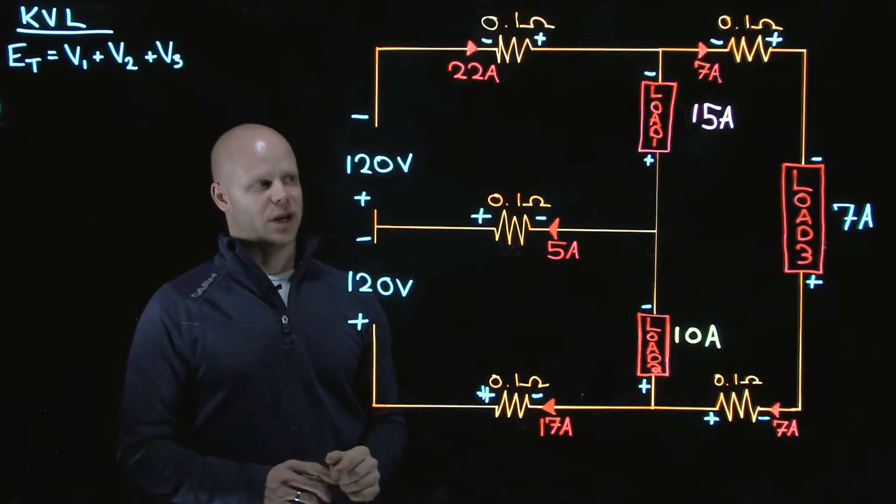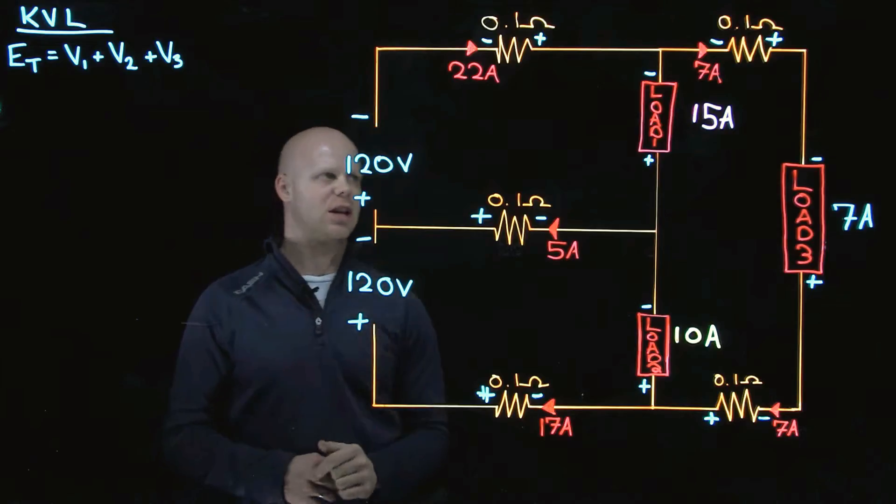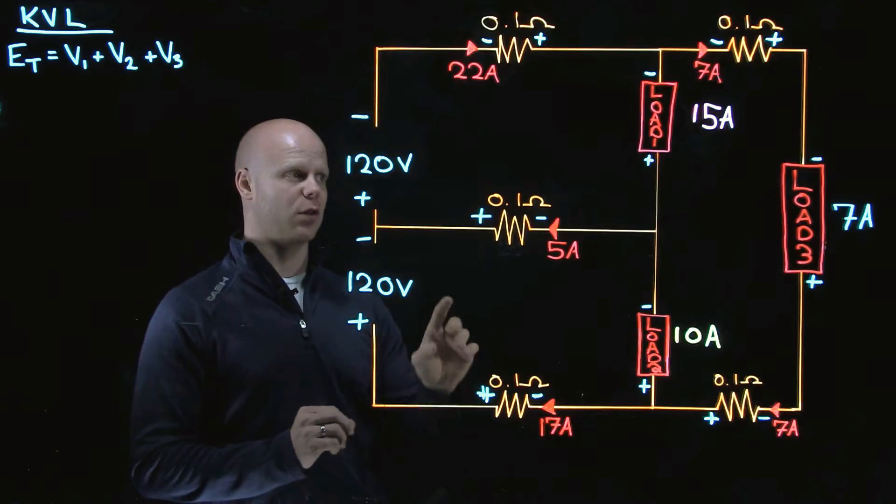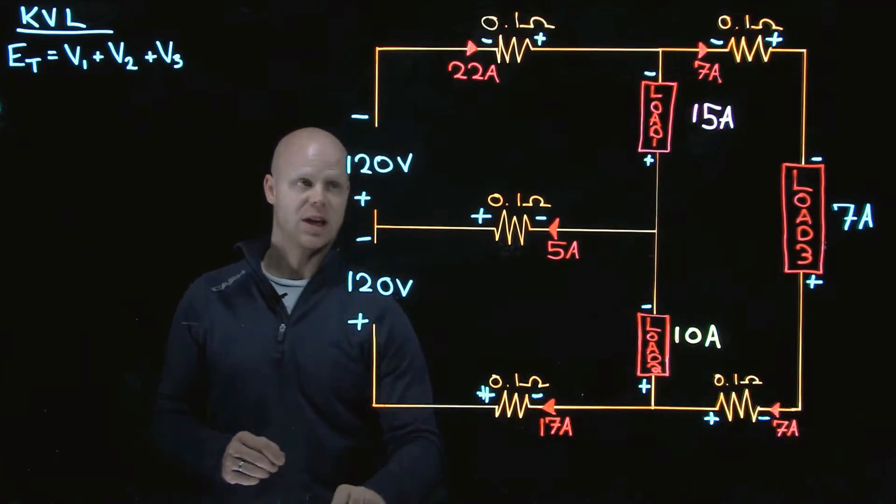We need to understand that polarity and we have to have that polarity plotted correctly. We use it with the direction that current is actually flowing through the circuit from negative to positive. You can use conventional flow with positive to negative. Both are just as accurate.